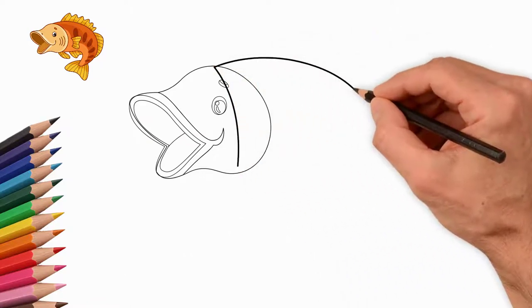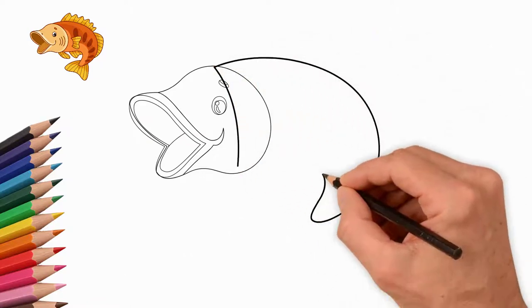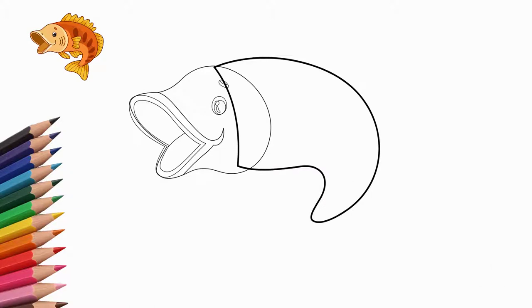Next, draw the body of the fish. Fish swim. The body of the fish is bent.